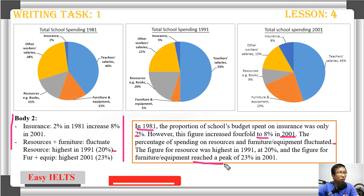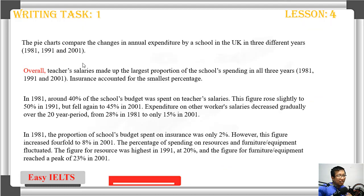'The figure for furniture and equipment reached a peak' — instead of saying 'the highest' we can use 'reached a peak' — 'of 23 percent in 2001.' So this is the entire essay. You should write this down and read it a couple of times so that you understand how to write the introduction, overview, and the detail body paragraphs.